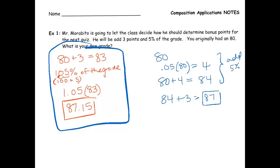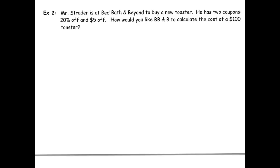So I'm going to try the next question with you, but I'm going to introduce a little bit of notation to show you how we actually are doing a composition. Okay, so now Mr. Strader is at Bed Bath & Beyond, he's going to buy a toaster. And Bed Bath & Beyond has two types of coupons. Now in real life, they don't let you use both coupons on the same thing, but we're going to pretend that they do. So he finds this $100 toaster, and he wants to use his 20% off coupon and his $5 off coupon.